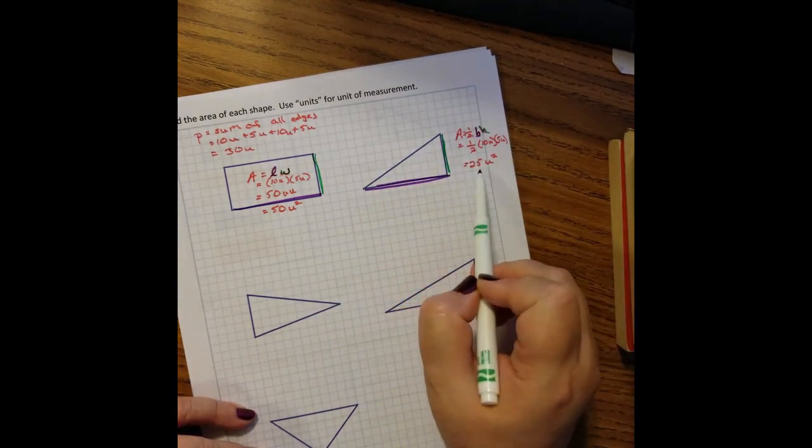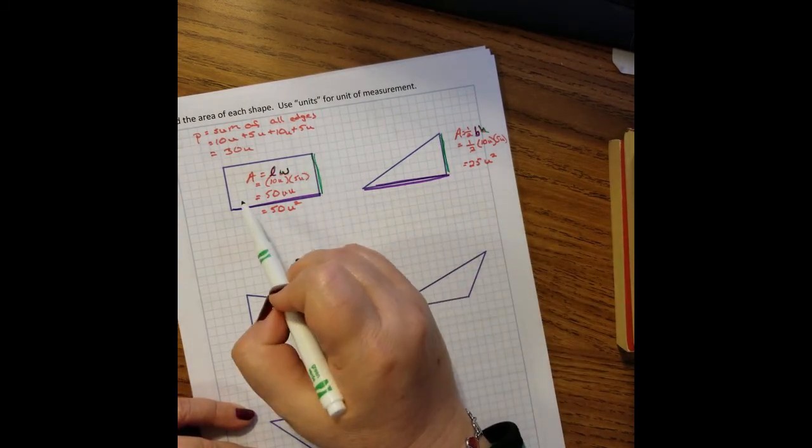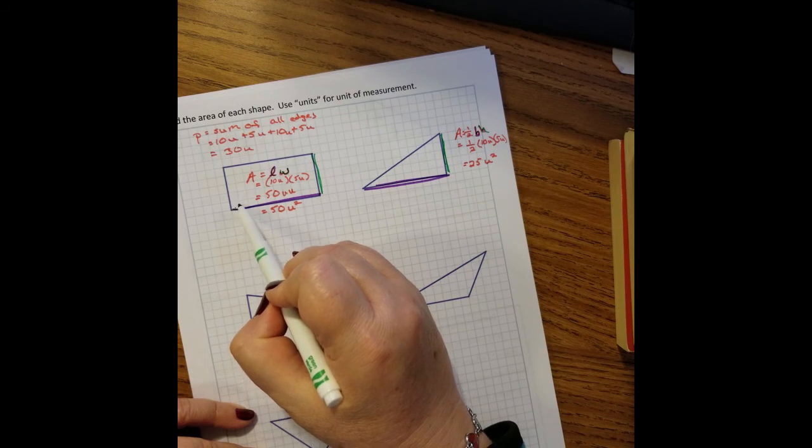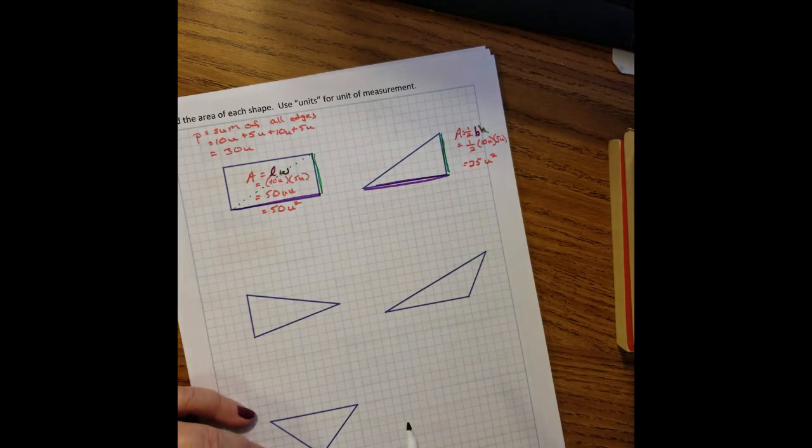So this is half of this, so 25 is half of 50 because we cut it in half. This is if we drew straight across here and cut it through there. That triangle would match that triangle.